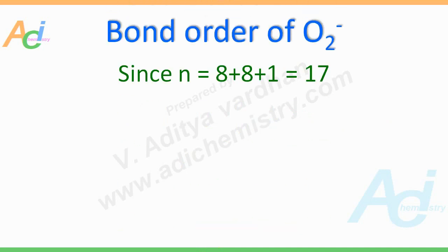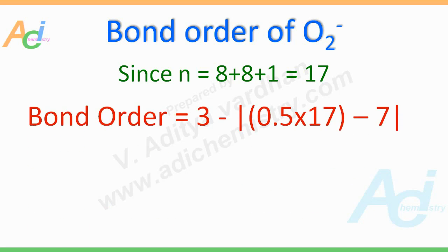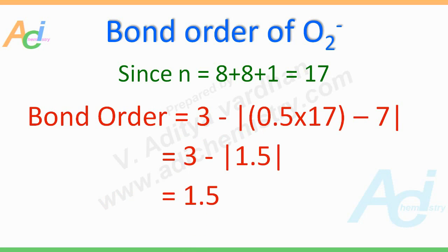The third example: O₂⁻. Here there is one extra electron, so it is 8 plus 8 plus 1 equals 17. This is the total number of electrons present in the O₂⁻ species. Just plug in this value, and it comes to 3 minus 1.5, which equals 1.5. This is the bond order of the O₂⁻ species.